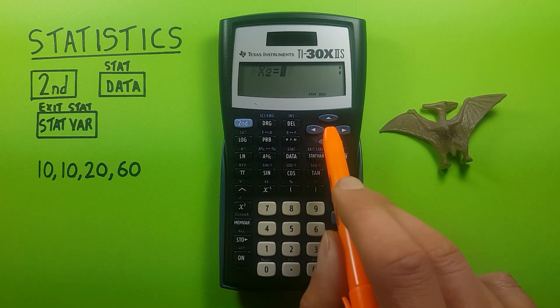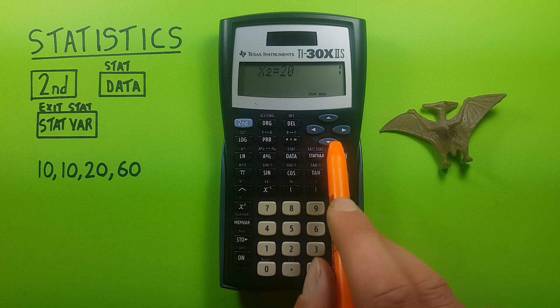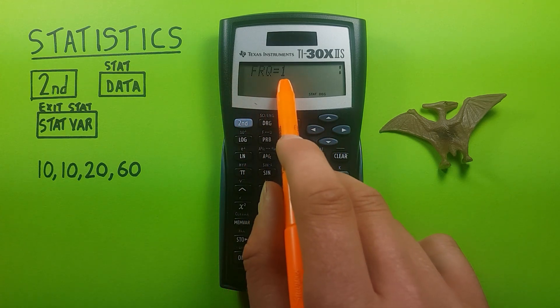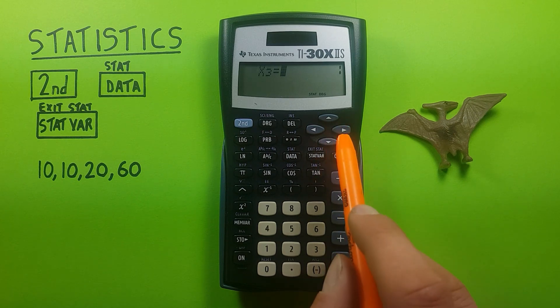All right, press down. x2 is asking for our second piece of data, or our second unique piece of data, and we press 20 because that's it. Down, frq equals 1. Well 20 only occurs once, so we're good. Down again.